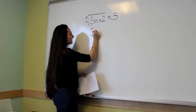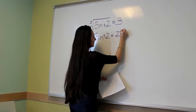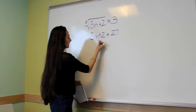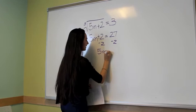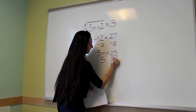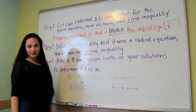So you get 5m plus 2 equals 27. And now you're going to subtract the 2 on both sides to isolate the m value. So subtract 2 and you get 5m equals 25. And then divide by 5 and get m equals 5.